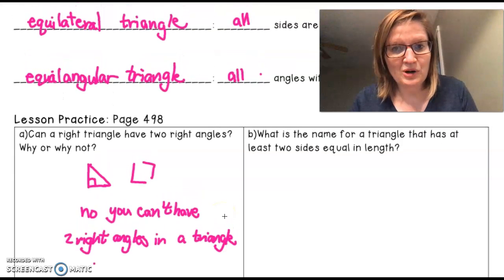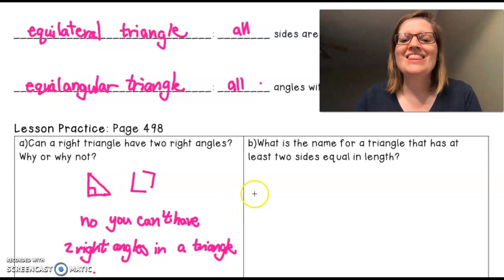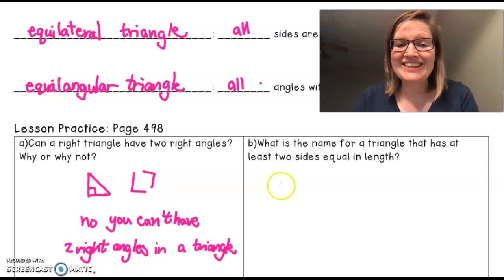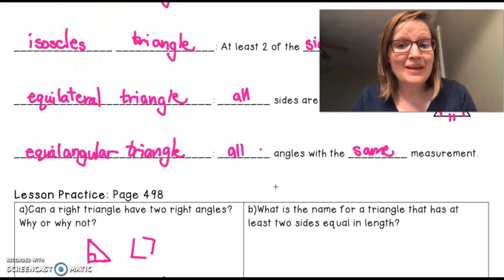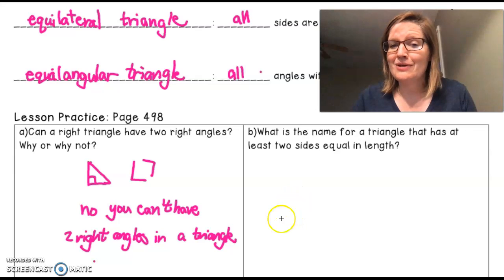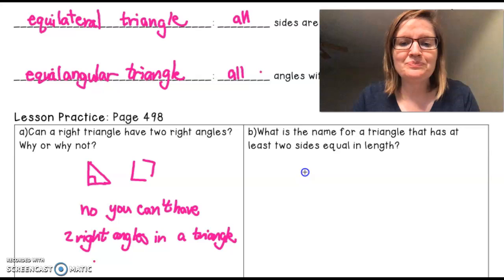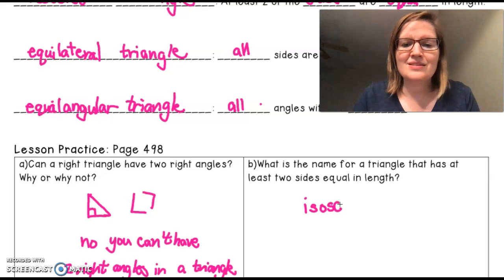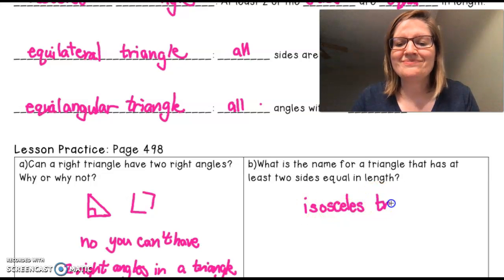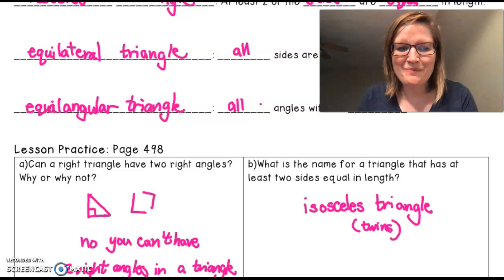Our next question, hopefully you are paying attention. What is the name of a triangle that has at least two sides that are equal in length? I hope you were paying close attention. If you want to peek, take a little peek at your notes. I call this my little twin. That C is silent, isosceles triangle. I think twins. And there you have it. Good luck on the homework, my friends.